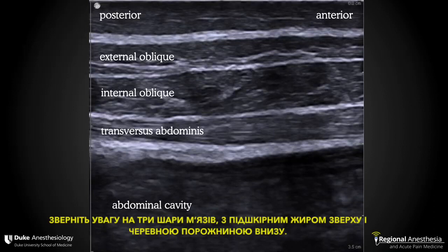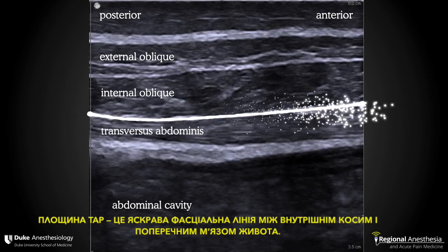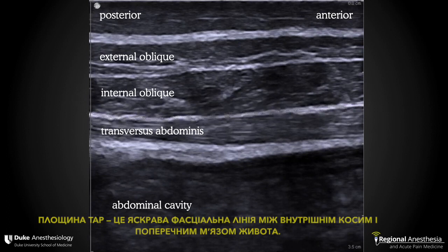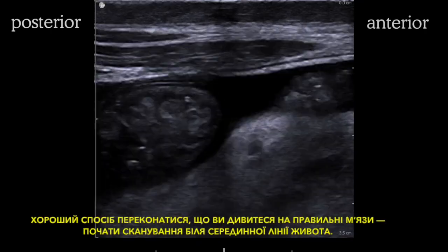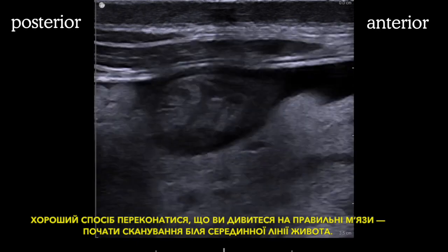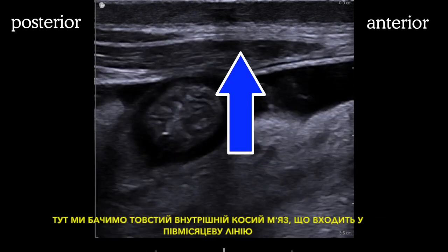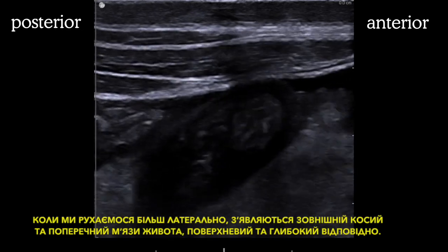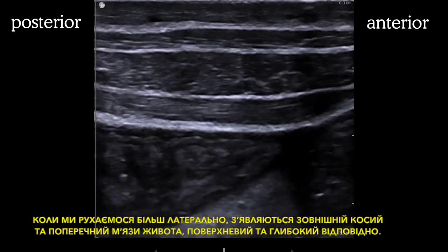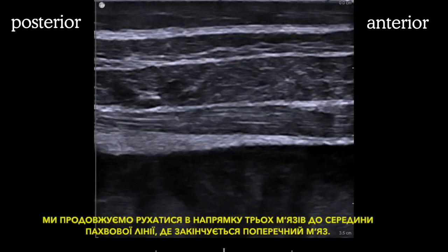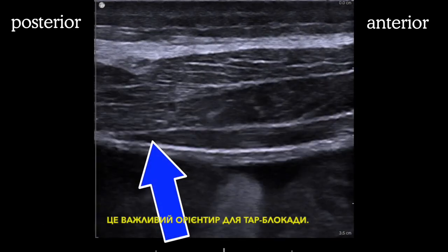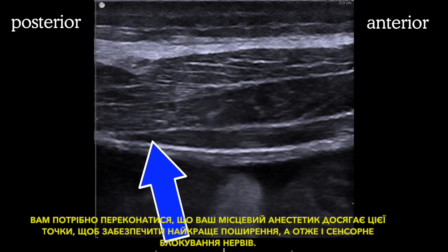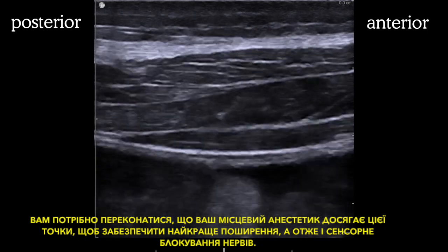Here's a typical sonogram for the TAP block. Note the three layers of muscle with subcutaneous fat above and the abdominal cavity below. The TAP plane is the bright fascial line between the internal oblique and transversus abdominis muscle — this is where the nerves travel. A needle will be seen entering the screen from the anterior aspect. A good way to make sure you're looking at the correct muscles is to start scanning near the abdominal midline, where we see the thick internal oblique inserting into the linea semilunaris. As we travel more laterally, the external oblique and transversus abdominis muscle appear superficially and deep respectively. We continue to follow these three muscles around to the midaxillary line where the transversus comes to an end — this is an important landmark for the TAP block. You want to ensure that your local anesthetic reaches this point to provide the best possible spread and therefore sensory block to the nerves.